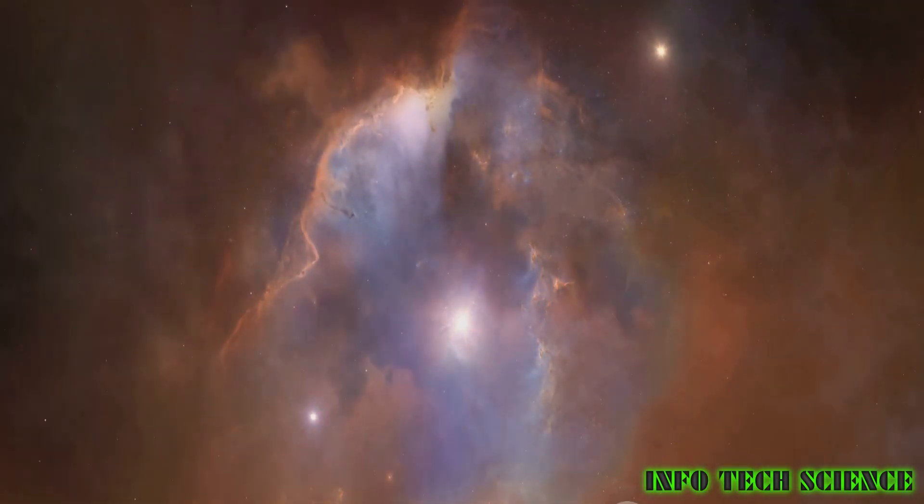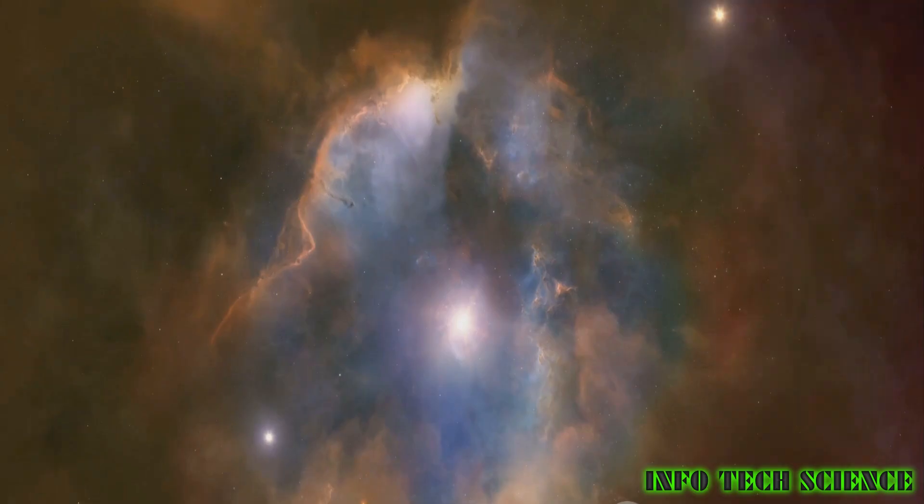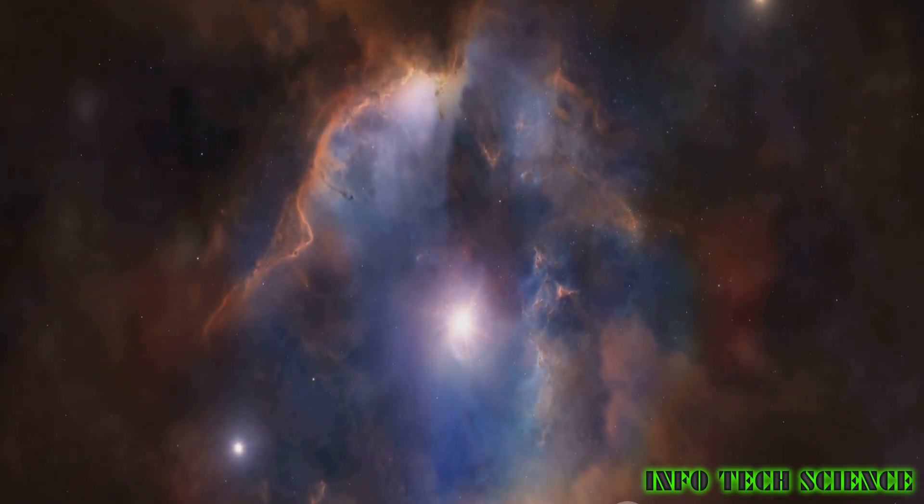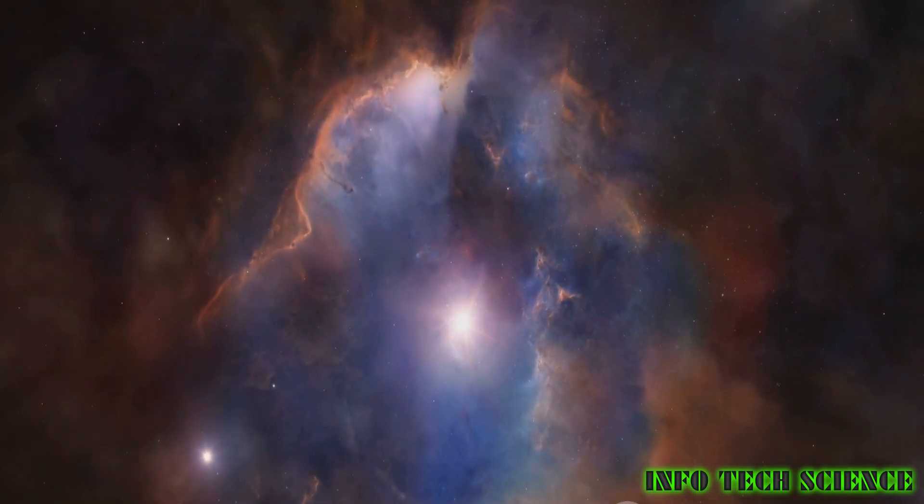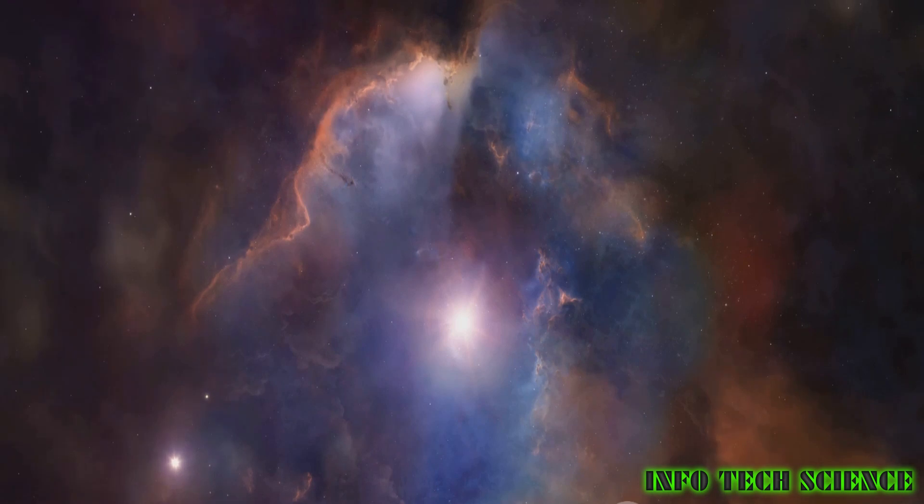But ultimately, they will either shrink into white dwarfs if their mass is insufficient, or explode in a supernova. The aftermath of such a stellar explosion could either be a black hole or a neutron star, depending on the star's mass.